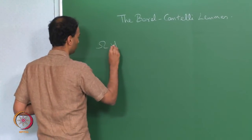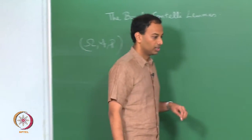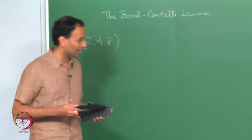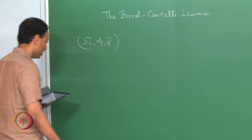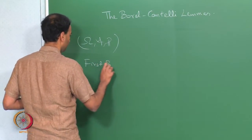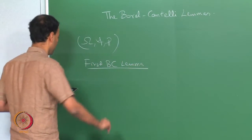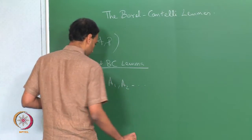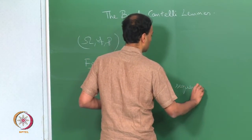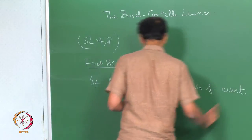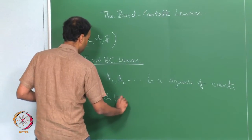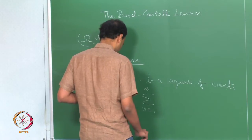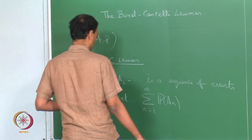As usual, you are given a probability space (Omega, F, P). There are 2 Borel-Cantelli lemmas that we will study — there are actually a few more versions, but we will study the 2 most famous ones. The first Borel-Cantelli lemma says the following: if A_1, A_2, ... is a sequence of events such that the sum over n equals 1 through infinity of probability of A_n is finite,